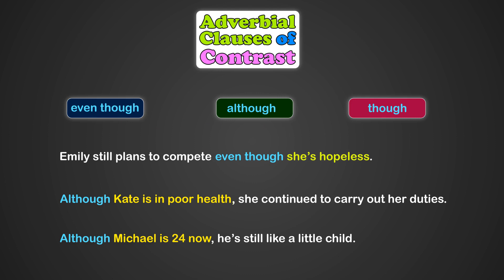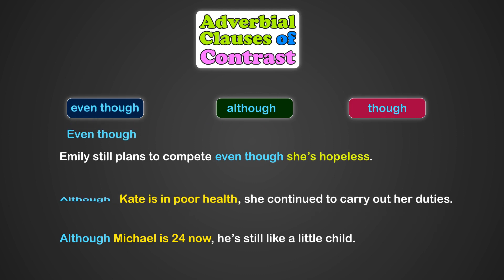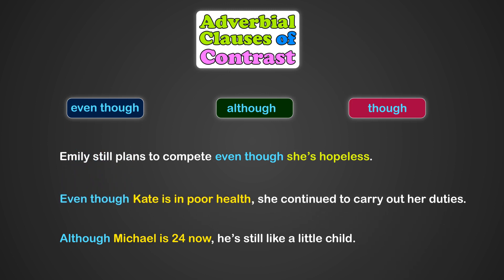'Emily still plans to compete, even though she is hopeless.' 'Even though Kate is in poor health, she continued to carry out her duties.' 'Even though Michael is 24 now, he is still like a little child.' Here, I need to point out that the subordinate conjunction 'though' is a little bit informal, but has the same meaning as 'although' and 'even though.'